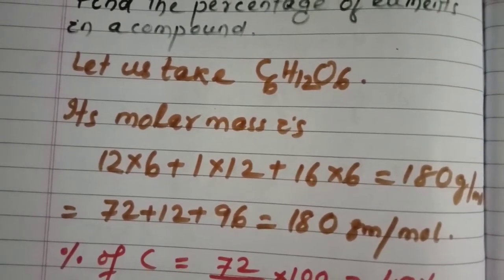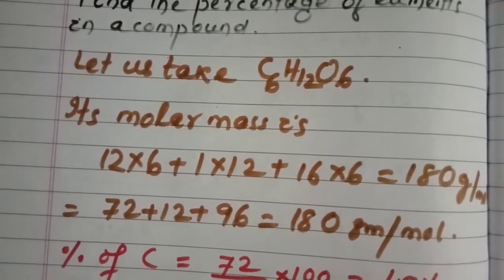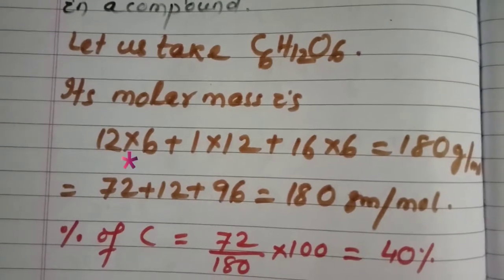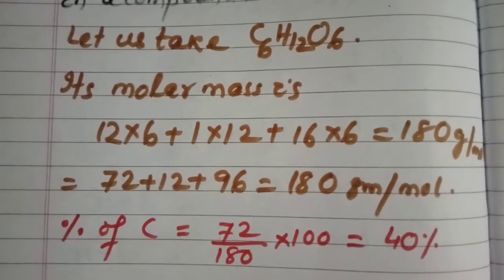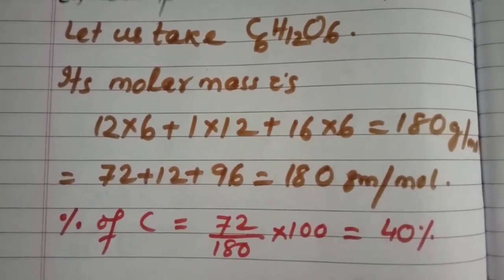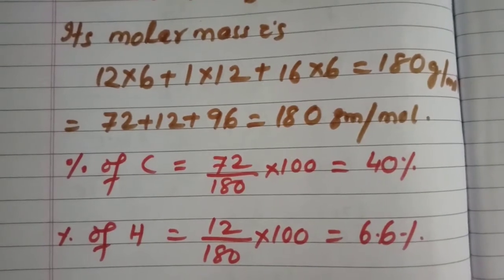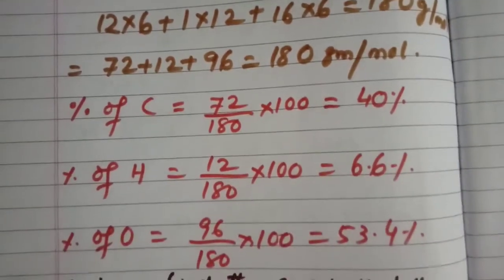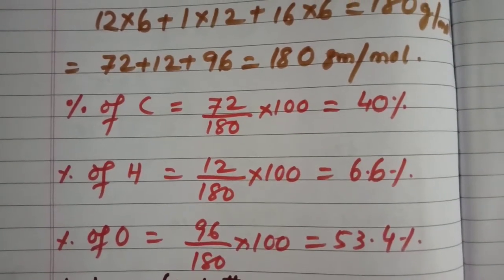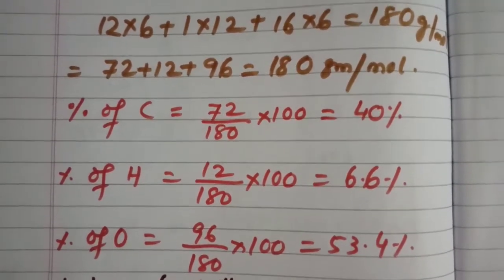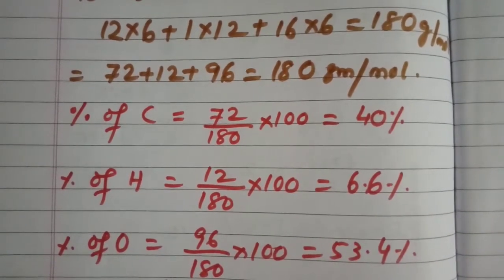Now let us find the percentage of carbon in glucose. The percentage of carbon is equal to 72 divided by 180 into 100. Here 180 is the total molar mass, and the percentage of carbon in this compound is 40%. Similarly, the percentage of hydrogen is 12 by 180 into 100, which is equal to 6.6%. Similarly, the percentage of oxygen is 96 by 180 into 100, which is equal to 53.4%. So you have calculated the percentage of carbon, hydrogen, and oxygen in glucose.